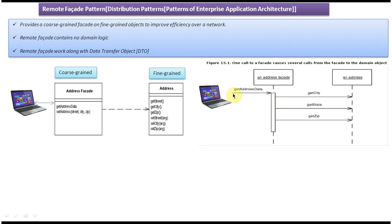Suppose this address packet is not there — the client would have to make multiple calls to the server to get the address information. In this case, we just call the address packet, and the address packet is responsible for getting all the values from the domain object, formulating those values, and sending them back to the client.